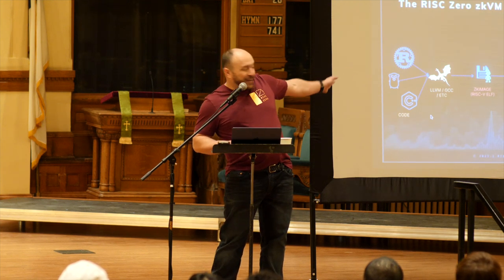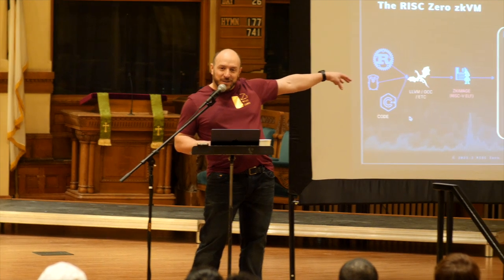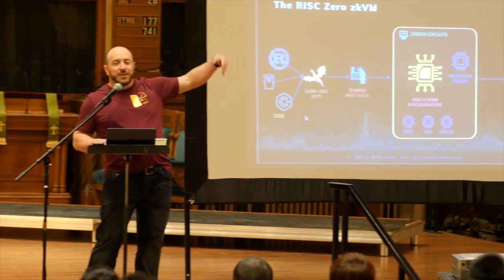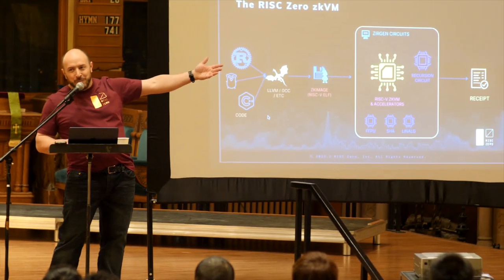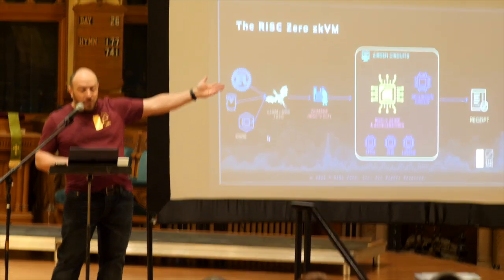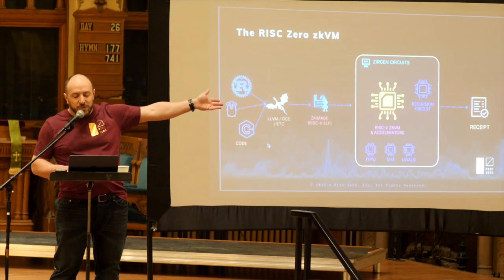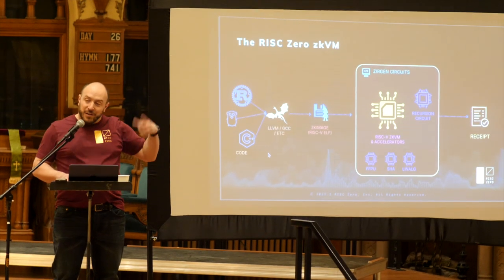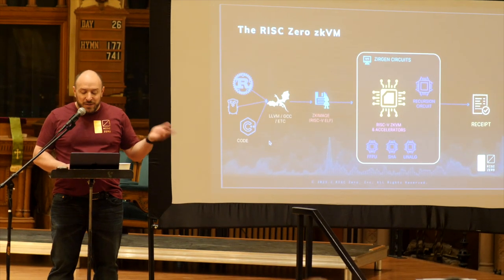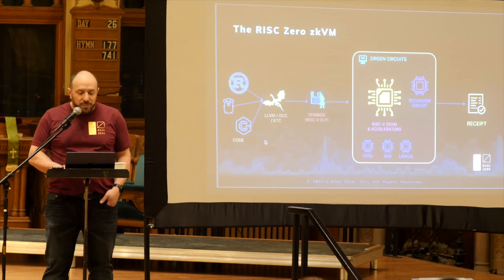Just very quickly for people who maybe don't know how ZK-VMs work: you take your code, some kind of compiler turns it into some kind of image, and then that code actually acts as input to your circuit. Your circuit is a VM — an actual microcontroller — it interprets the input, which is a program, runs it, and then produces a ZK proof.